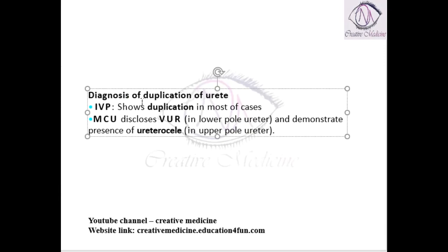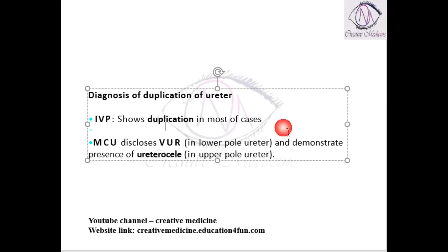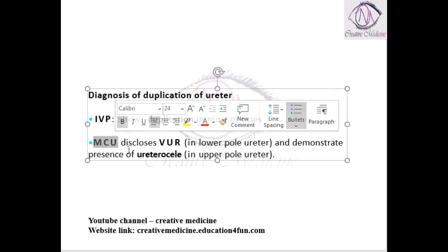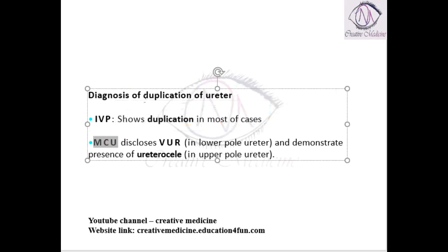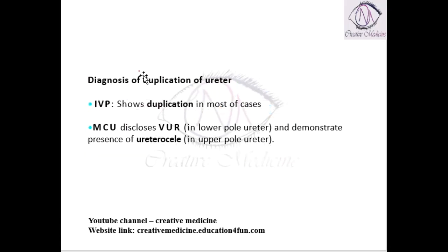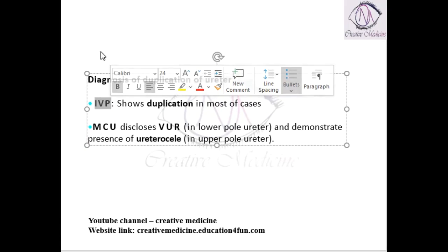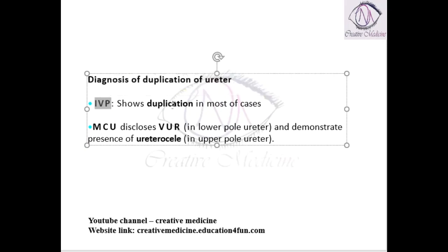The duplication of ureter can be diagnosed by two investigations. One, intravenous pyelogram is done, and micturating cystourethrogram is done. Intravenous pyelogram will definitely show the duplication in most of the cases.